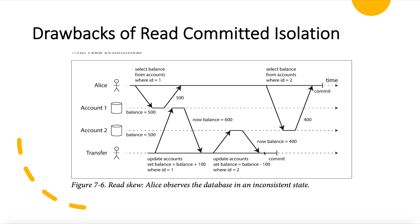When Alice again tries to find out the balance in account two, while T1 is still in progress and T2 has already committed, she sees the balance as 400. So if we sum the balances in both accounts — account one (500) and account two (400) — it comes to 900, whereas it should be 1000. Alice sees the database in an inconsistent state because T1 reads the latest committed value and not the one that existed before it started. This situation is called a non-repeatable read or a read skew.